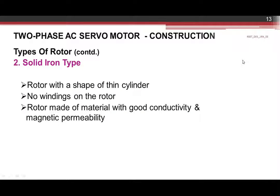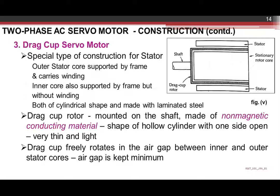The second type is a solid iron rotor — cylindrical in shape, with a thin cylinder and no winding present on the rotor. It is made up of a material with good conductivity and magnetic permeability.